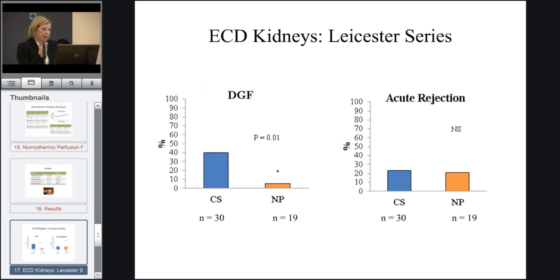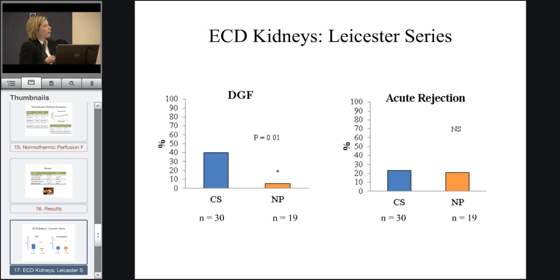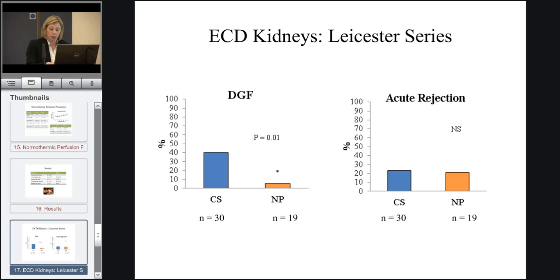Briefly, I just wanted to compare these results — though it is very early days — with an historical group of kidneys from ECD donors in our group over the same time period. We performed 30 transplants where the kidneys underwent just static cold storage, and we had a delayed graft function rate of 40% in these kidneys compared to only 5% in the normothermic group. These results are extremely promising. We had the same incidence of just above 20% for acute rejection.